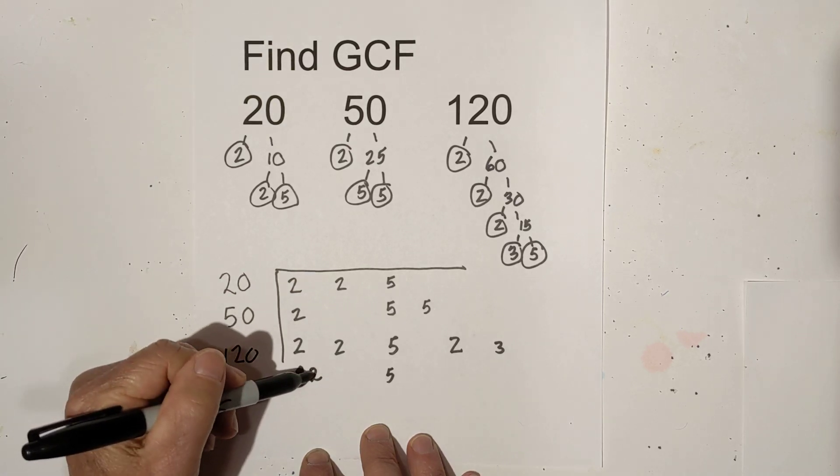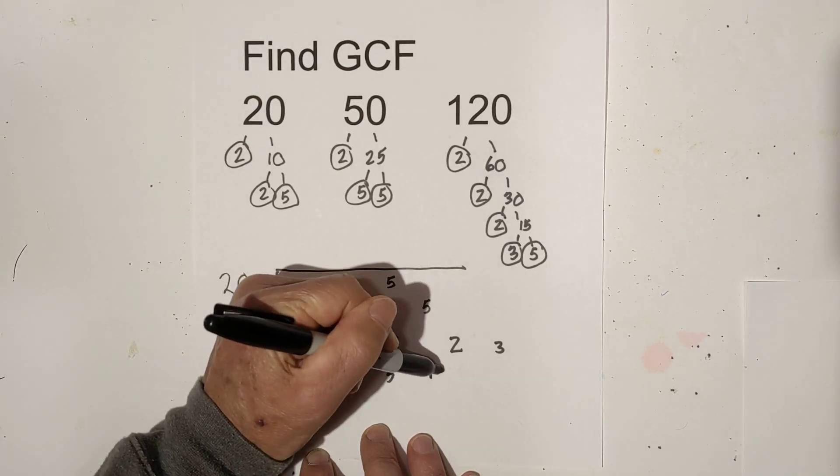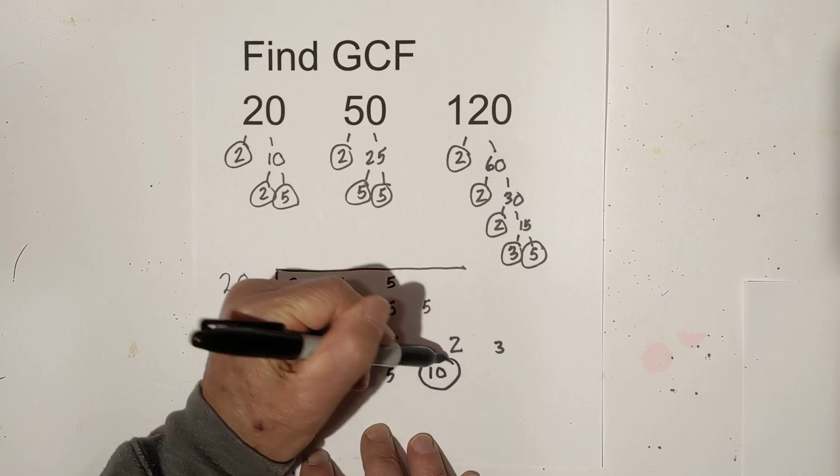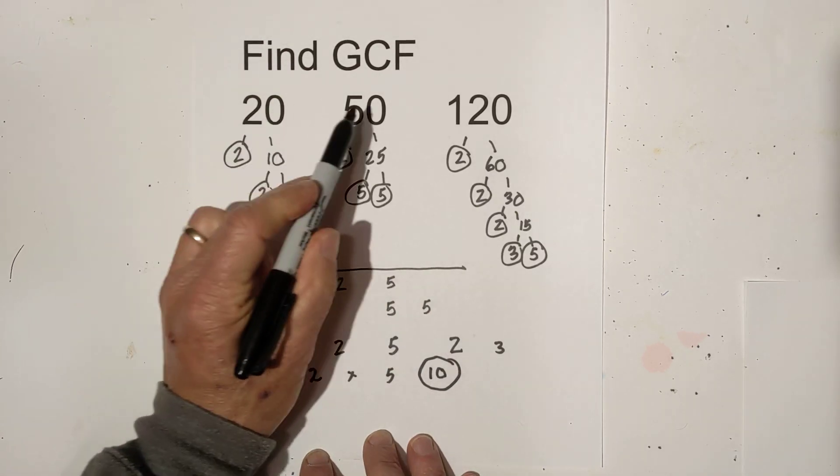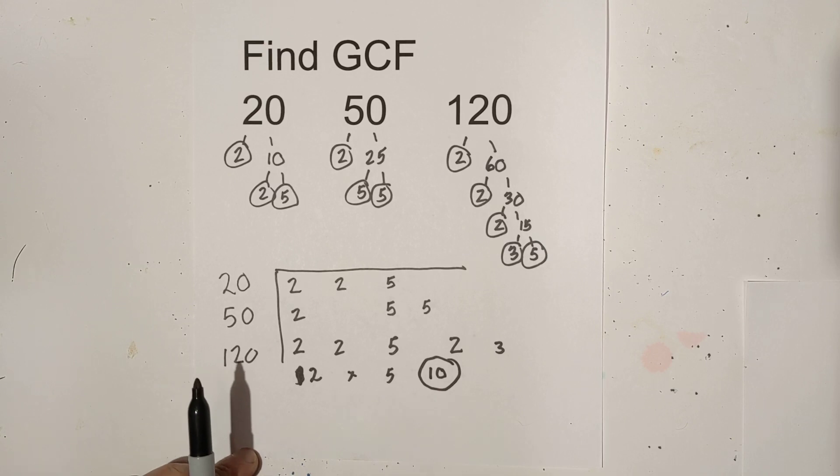So now all I do is I multiply 2 times 5. So the greatest common factor of 20, 50, and 120 is 10.